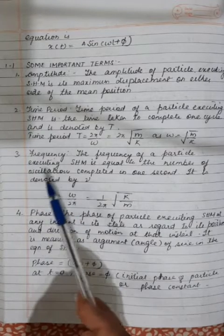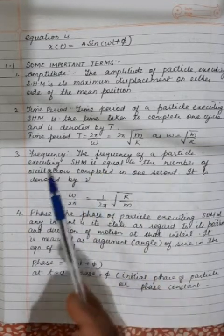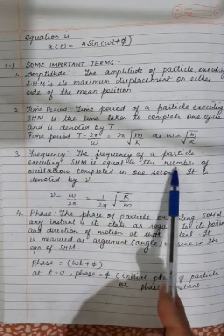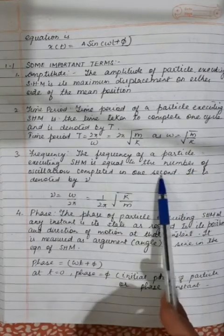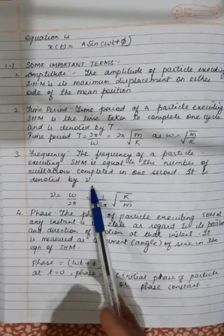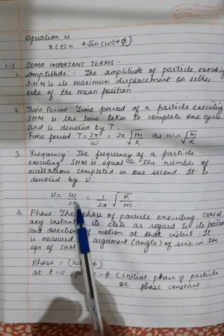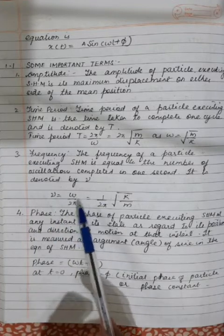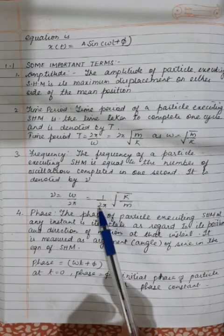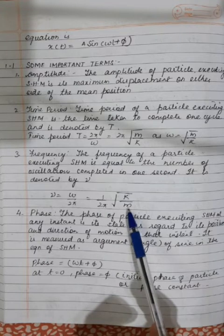The frequency of a particle executing simple harmonic motion is equal to the number of oscillations completed in one second. It is denoted by ν: ν = ω/(2π) = (1/2π)√(k/m).